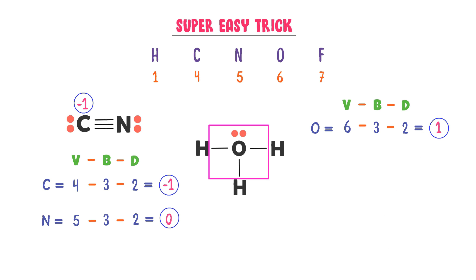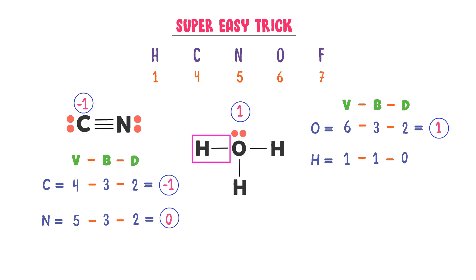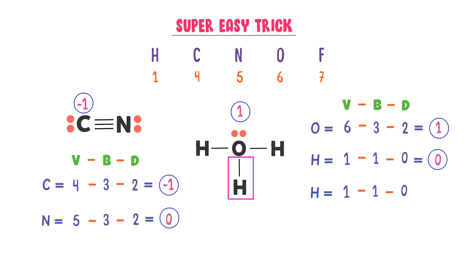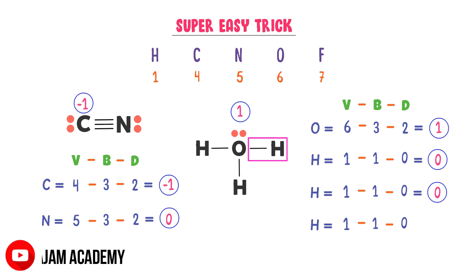Now coming to the first hydrogen atom. The valency of hydrogen is 1, minus this hydrogen atom forms one bond, minus there are no dots present. So we get zero. The second hydrogen atom: valency is 1, minus it forms one bond, minus no dots — so we get 0, the formal charge is also zero. For the third hydrogen atom: valency is 1, minus it forms one bond, minus no dots — so we get zero. The formal charge on this hydrogen atom is also zero.